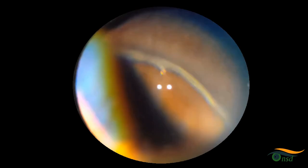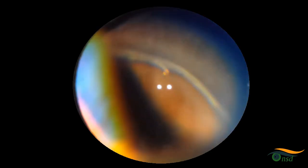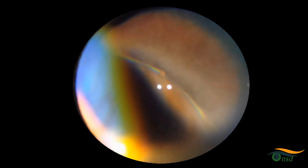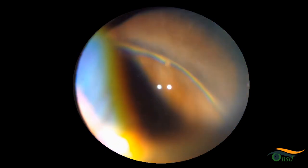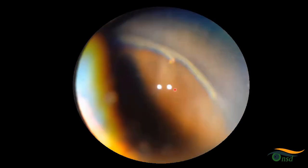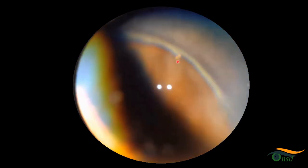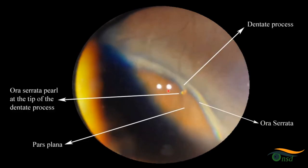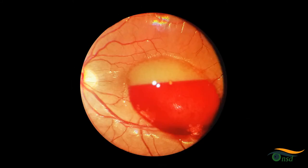Oral pearl — these are drusen-like bodies seen in 20% of individuals. They are more of clinical curiosities and have no clinical significance, but it's exciting to see them once in a while. After all, it is a pearl.